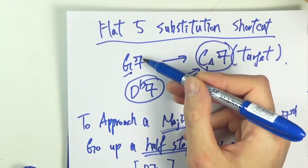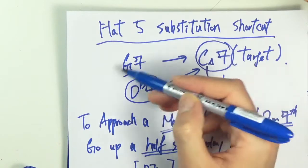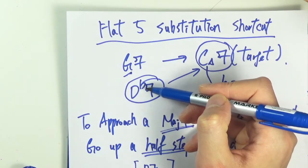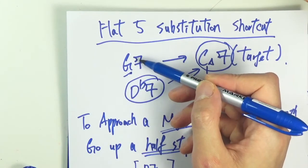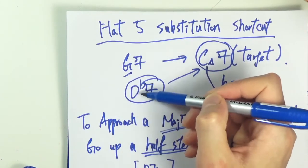When you're soloing, everything that you play on a G7 chord will most probably work on the D flat seven chord as well.